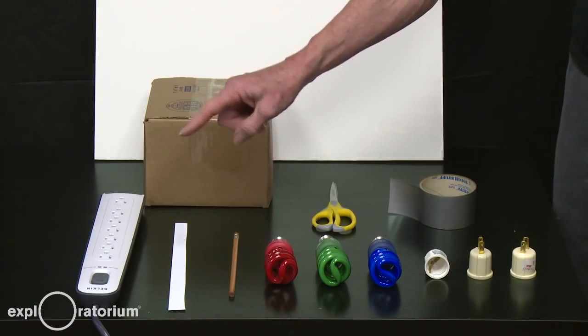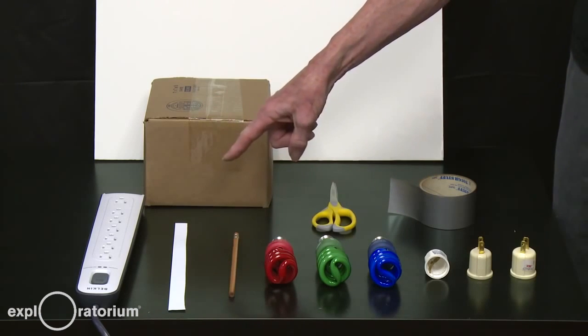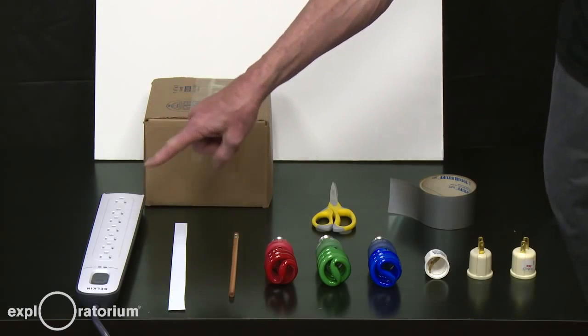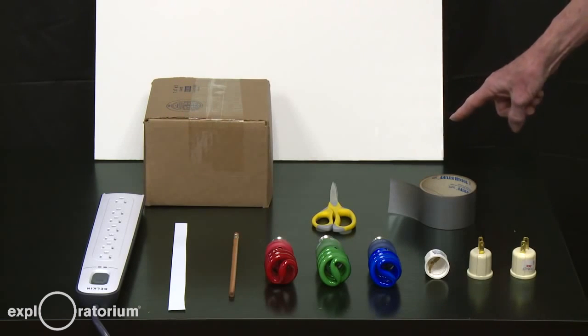You'll need a pencil, a strip of paper half an inch by 11 inches, and a power strip. You'll also need foam core, ours happens to be 22 inches by 28 inches, and you'll want it to be white.